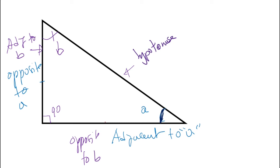In a right angle triangle we have hypotenuse, adjacent, and opposite. The adjacent and opposite names depend on the angle. If I take this angle, this side will be the adjacent. The opposite to one angle is the adjacent to the other angle.